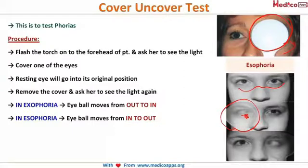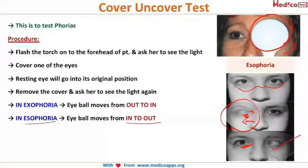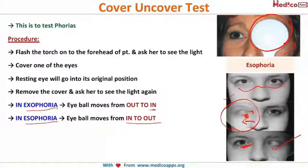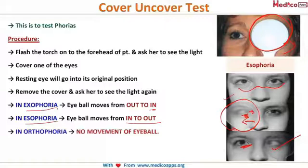When you remove the cover, the eye returns to the central position. If the eye has deviated inward under cover, it will move outward when uncovered — this means the patient has esophoria (in to out). Conversely, if the eye deviates outward under cover and moves inward when uncovered, that is exophoria (out to in). In orthophoria, there is no movement of the eyeball. Most phorias do not require any treatment.